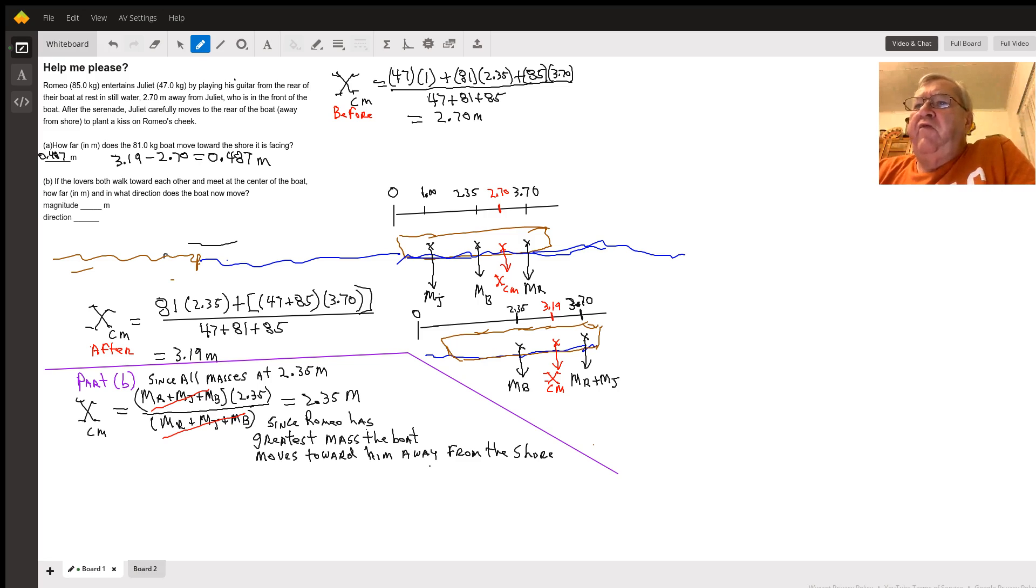From that reference point, we calculate by taking the product of each mass: Juliet's mass times her distance, the boat's mass times its distance, plus Romeo times his distance, divided by the total mass.